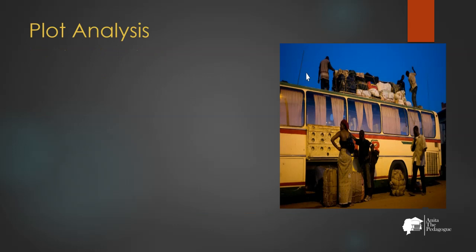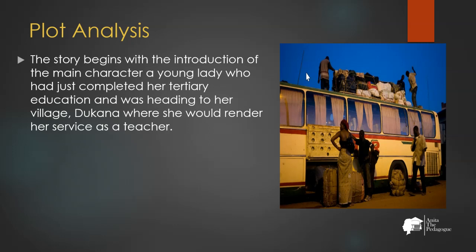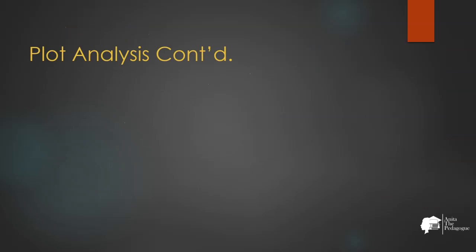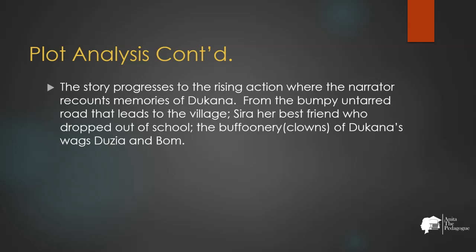The story begins with the introduction of the main character, a young lady who had just completed her tertiary education and was heading to her village Dukana, where she would render her service as a teacher. In the bus she commutes in, named 'Progress,' she encounters the bus driver who, though showing love for his village, was arrogant and tried to impress the narrator. He exalted Progress to move like a lady — a fine lady, an educated lady — referring to the narrator. The story progresses to the rising action where the narrator recalls memories of Dukana, from the bumpy untarred road leading to the village, to Sira her best friend who dropped out of school.